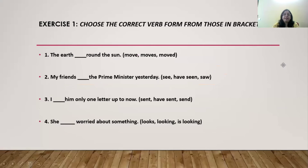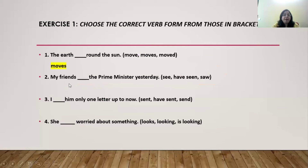Now let's do one exercise — choose the correct verb form from those given in the brackets. 'The earth ___ round the sun.' Options: move, moves, moved. The correct answer is 'moves.' 'My friends ___ the prime minister yesterday.' Options: see, have seen, saw. The correct answer is 'saw.'